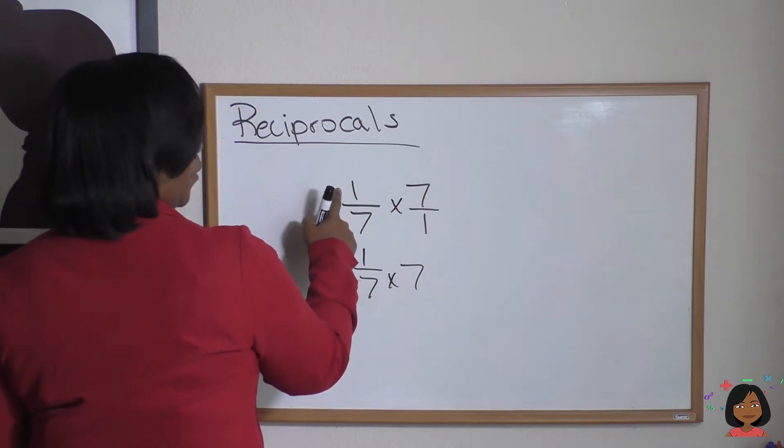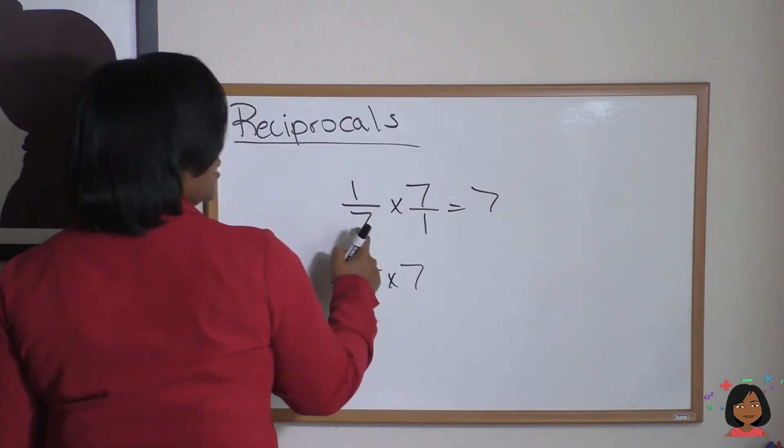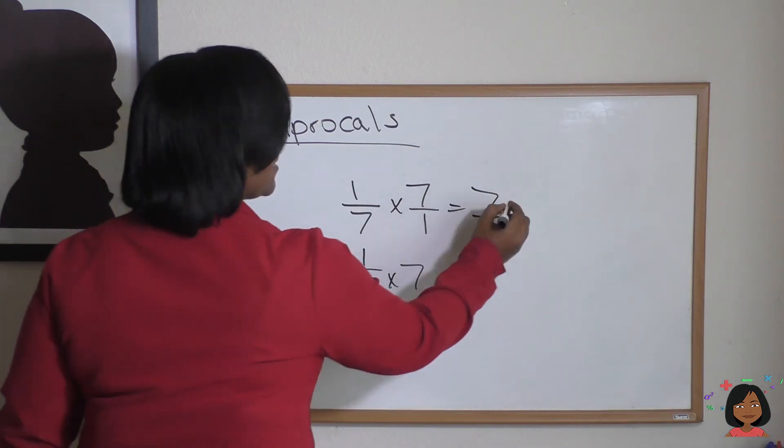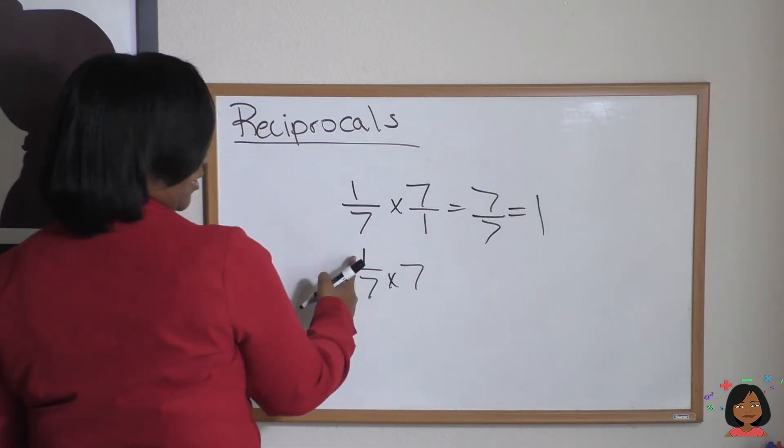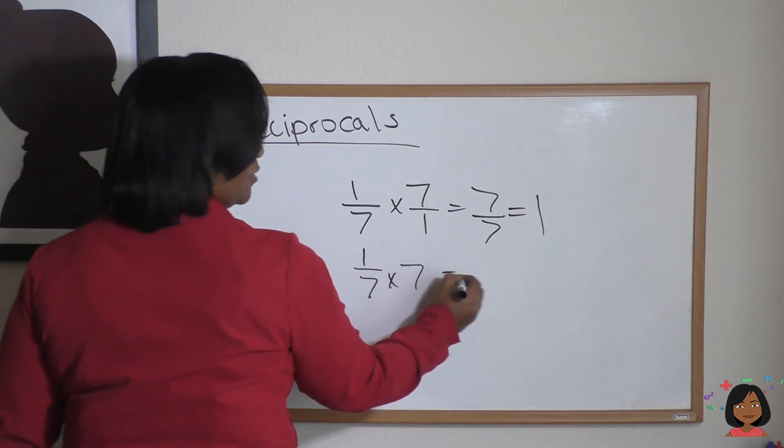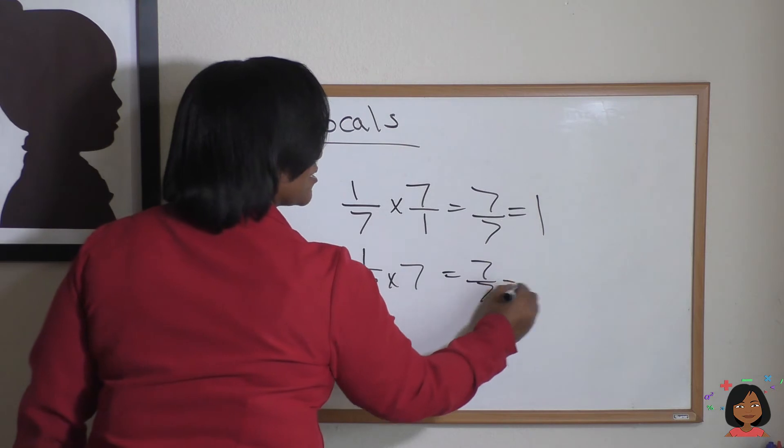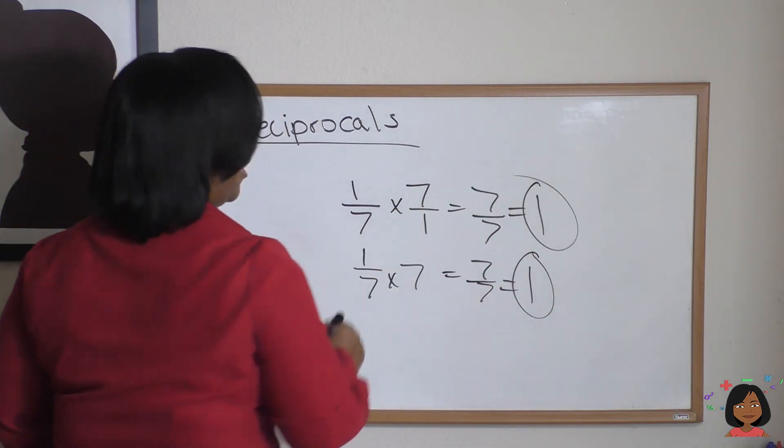But let's do the numerators: 1 × 7 equals 7, 7 × 1 equals 7. 7/7 is the same thing as 1. Here it would have been the same thing: 7 × 1 is 7, 7 × our imaginary 1 is still 7.